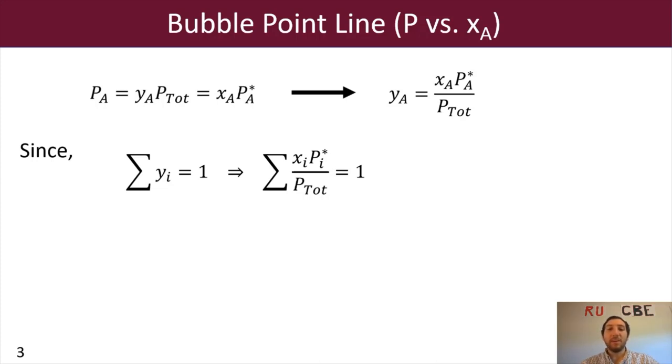And after doing that, we can rearrange that equation, sum of XI PA star divided by P total equals 1. We can rearrange that just a little bit so that we have P total equals the sum of XI PA star.